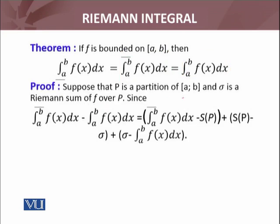Suppose that P is a partition of [a,b] and σ is the Riemann sum of f over P. Since I take the difference of these two, the upper integral minus this one, what I'm doing is adding and subtracting the upper sum S(P). You see, this minus S(P) and plus S(P) cancel out.